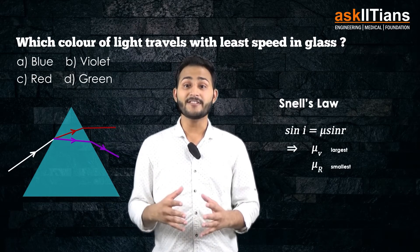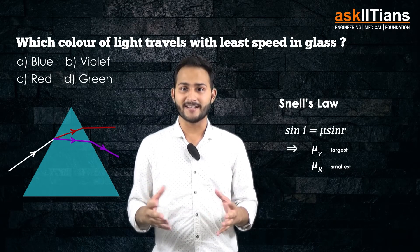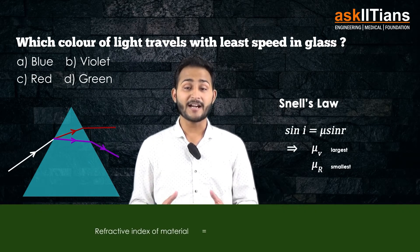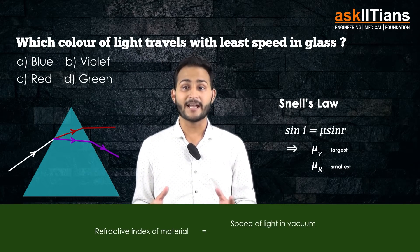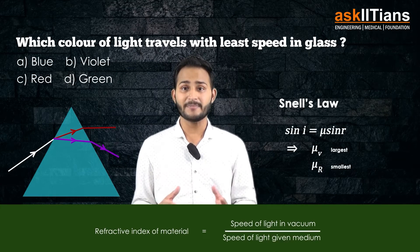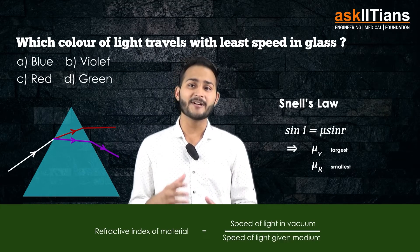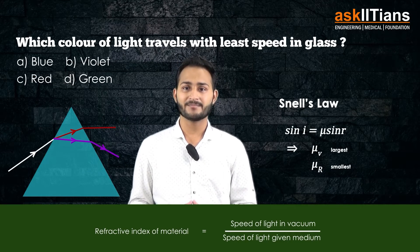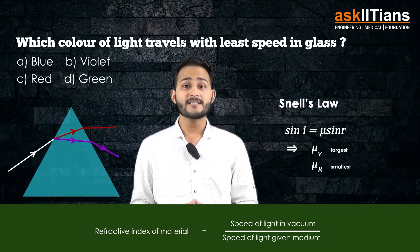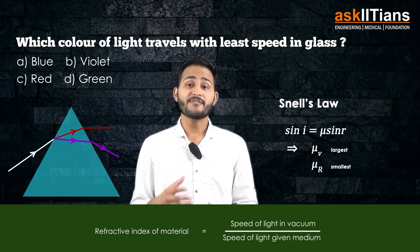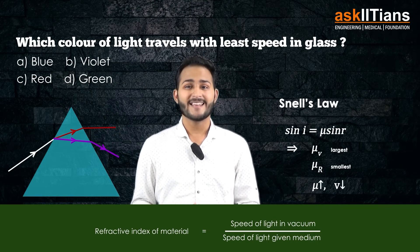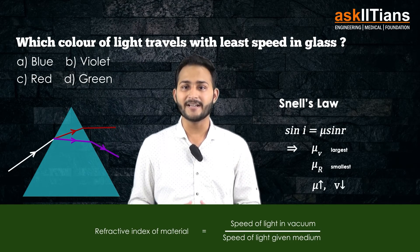Let's go into the definition of the refractive index. Refractive index of a material is actually the speed of light in vacuum divided by the speed of light in that particular medium. So that means larger is the refractive index, lesser would be the speed of light in that medium.